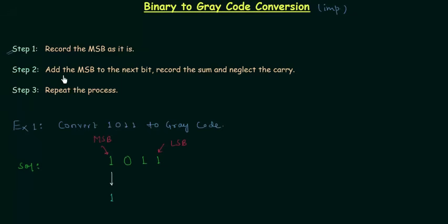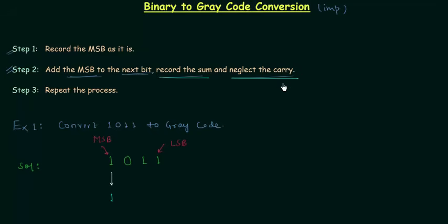In step number 2, we have to add the MSB to the next bit and record the sum, neglecting the carry. This is the most important step of the three. In this example, we add the MSB 1 with the next bit 0. 0 plus 1 gives us 1, so 1 is the next bit for grey code.